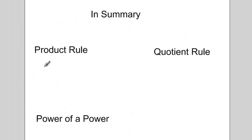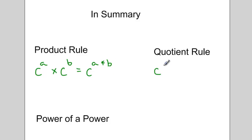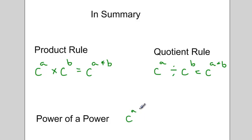Just to summarize, we looked at 3 rules today. The product rule: a power with a certain base multiplied by a power of the same base — simplify by adding exponents. The quotient rule: a power with a base divided by a power with the same base — simplify by subtracting exponents. And finally, the power of a power rule: if I have c to the exponent a, raised to the exponent b, I can simplify by leaving the base the same and multiplying the exponents together.